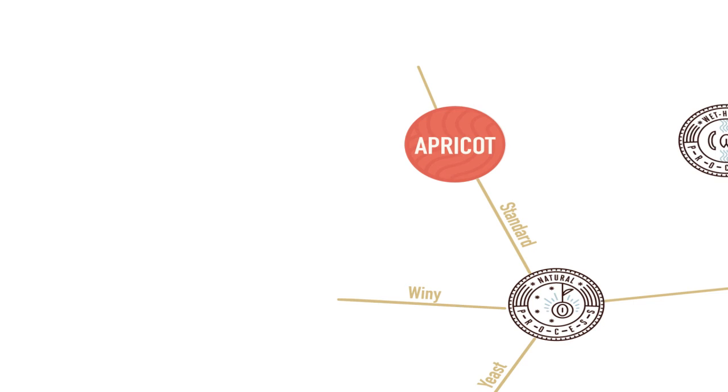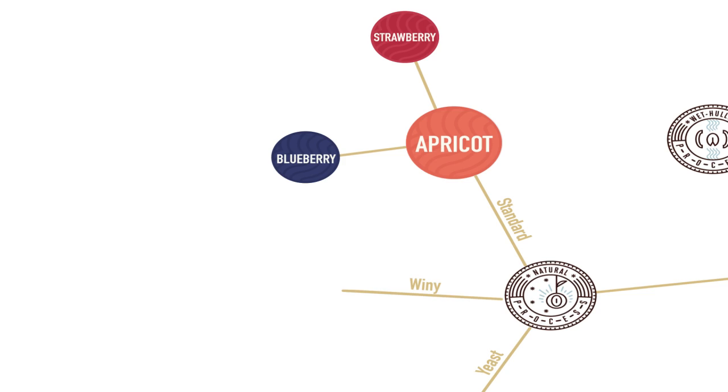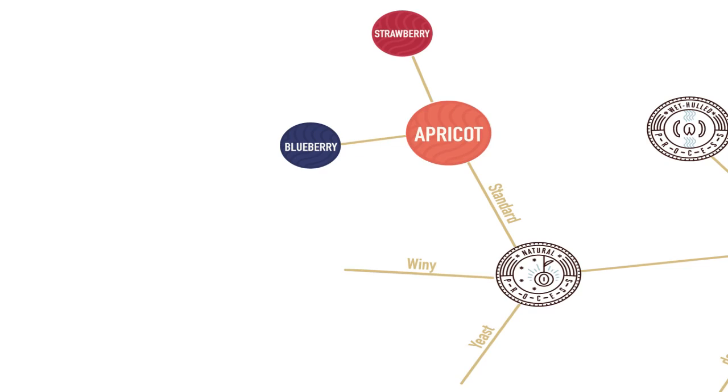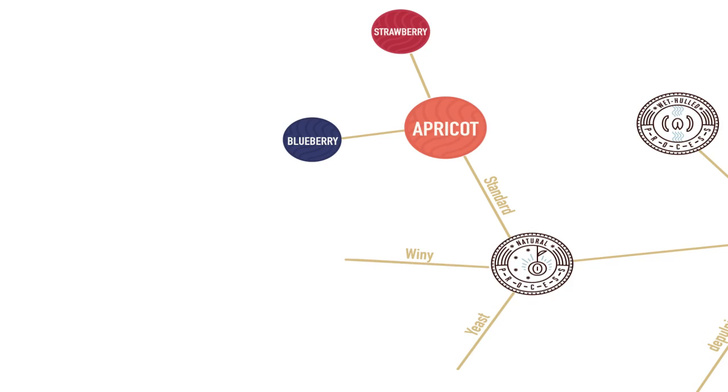We got more of these fresh berry-like flavors. You'll notice the apricot is slightly bigger in size than the strawberry and blueberry. That's because apricot was the primary flavor note, and strawberry and blueberry were secondary flavor notes. If the intensity was lesser, the size of the circle was smaller.